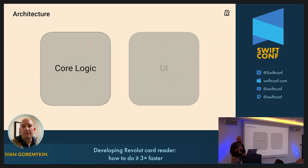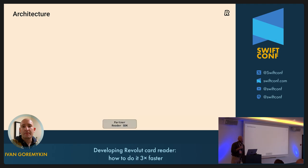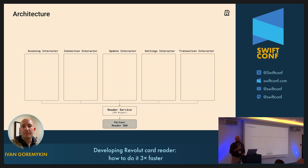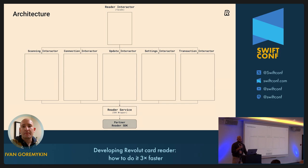At the bottom of the architecture we have the partner reader SDK, provided by our third-party partner. It has basic functionality for connecting to the reader — all Bluetooth communication is done by the partner — making transactions and so on. But we don't call it directly; we wrapped it in a Reader Service to make the systems above testable. It's basically a one-to-one mapping of the methods the partner SDK has. For every card reader operation we have a dedicated interactor — that's a Revolut term for controller. We have interactors for scanning, connection, updating, applying settings, and making a transaction. But clients of the system don't use these interactors directly; they use the facade Read Interactor that provides all the necessary functionality. The whole system is testable because we have dependency injection in place and can simulate whatever we want with mocks.